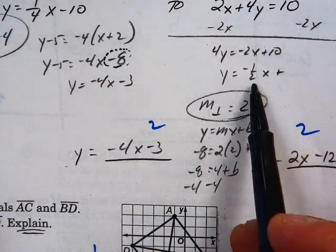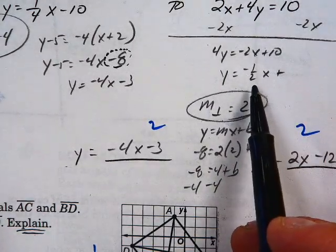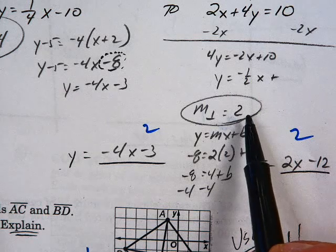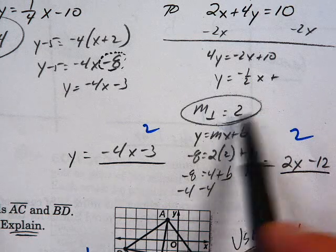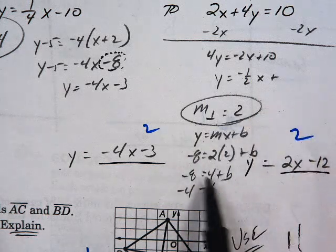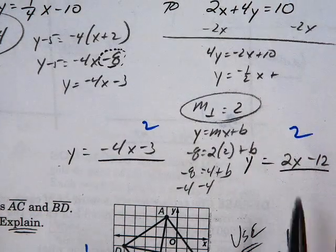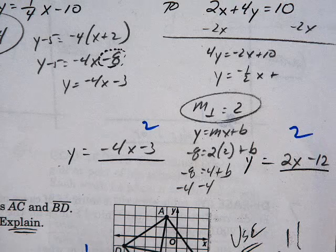Part C — perpendicular. This slope is negative 1 half, so the perpendicular slope is 2. I'm going to circle that, and then I just use my slope-intercept form and get 2x minus 12.